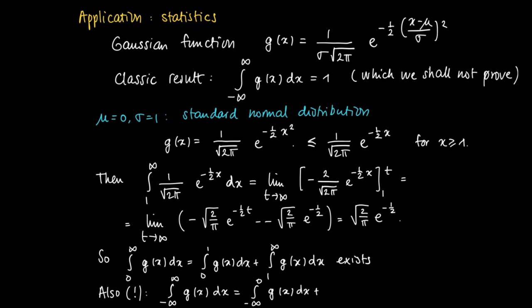We may split the integral from minus infinity to infinity of g into two pieces: minus infinity to 0 of g(x), plus 0 to infinity of g(x). Now, g is an even function, so the left and right integrals are the same, giving us 2 times the integral from 0 to infinity of g(x) dx. Since the integral from 0 to infinity of g(x) dx exists, so does 2 times that integral, and therefore the integral from minus infinity to infinity of g(x) dx exists. More details will be provided in the course Probability Theory and Statistics.